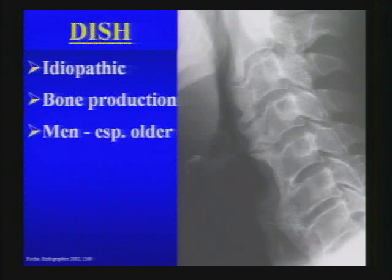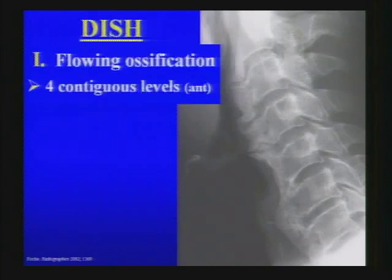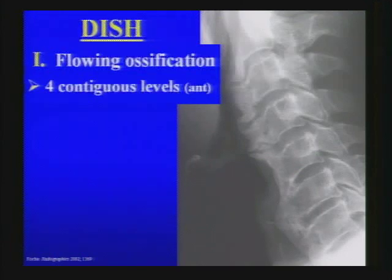DISH is diffuse idiopathic skeletal hyperostosis — idiopathic bone production typically seen in men. There are three official diagnostic criteria: first, flowing ossification over four contiguous vertebral levels anteriorly.